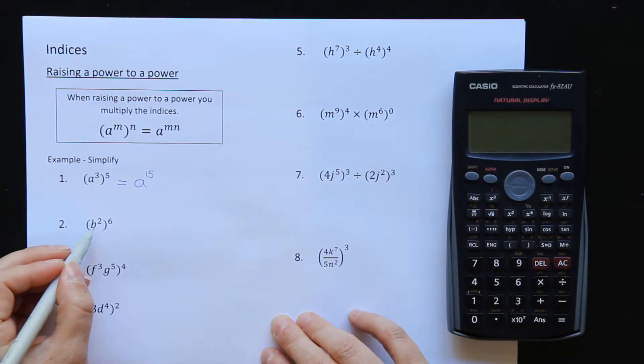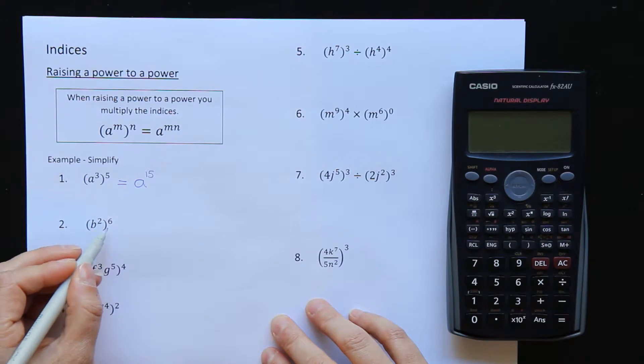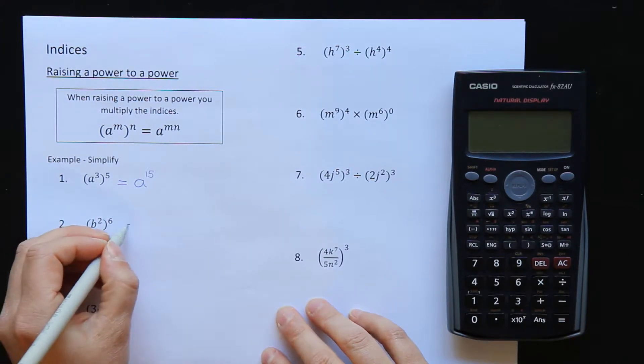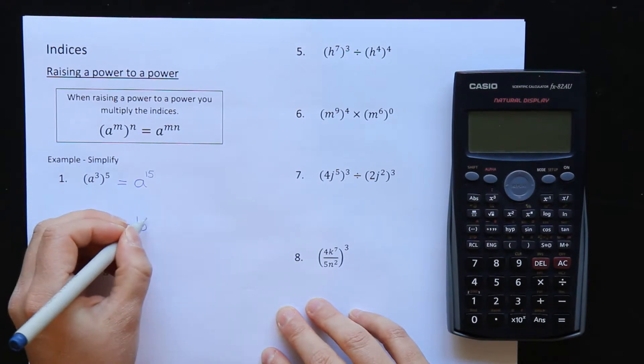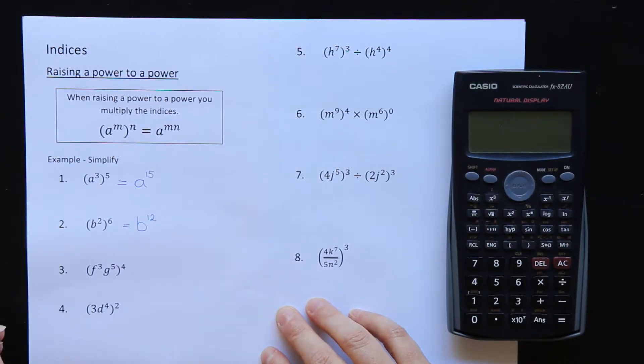Let's do it again. In this one, b squared to the power of 6. b is the base. Multiply the powers. 2 times 6 is 12. Done.